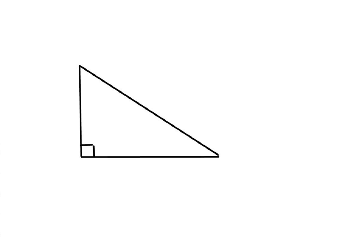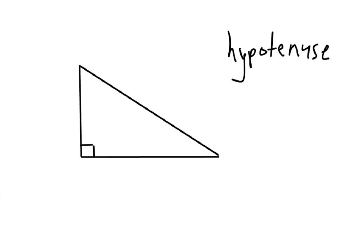In order to do these questions using Pythagoras' theorem, you are going to need a right-angled triangle, just like this one. The really important thing to do is to be able to identify what we call the hypotenuse. The hypotenuse is always the longest side of a right-angled triangle, and that side is always directly opposite the right angle. So we've got a right angle here, and directly opposite is our hypotenuse — this line here is the longest side. And that's what Pythagoras' theorem involves.